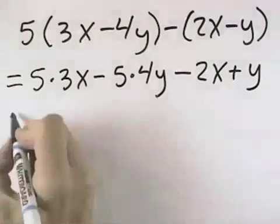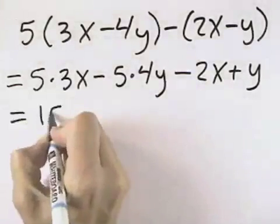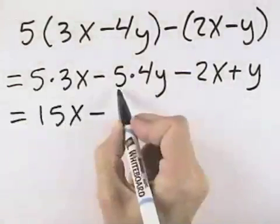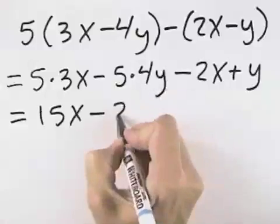So if we do the multiplication, we have 5 times 3x is 15x, minus 5 times 4y is 20y.